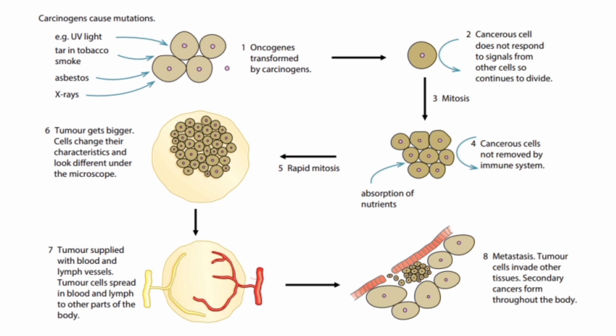Number four: cancerous cells are not removed by the immune system — the immune system is weakened by cancer. Number five: rapid mutation continues, eventually forming a tumor — a very large, irregular mass of cells. Number six: tumors get bigger and the cells change their characteristics, looking very different from normal cells under the microscope, as seen in the previous diagram.